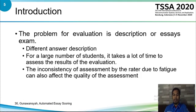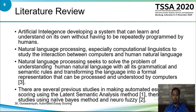The problem is that they still cannot provide a direct assessment of answers for description or essay questions. Different answer descriptions for a large number of students takes a lot of time to assess. The inconsistency of assessment by the teacher due to fatigue can also affect the quality of the assessment, causing it to decrease and sometimes become no longer objective. In the end, the variation of assessment in the class is different, which is perceived by students as a source of injustice.